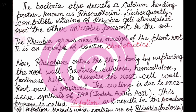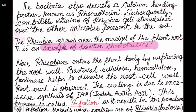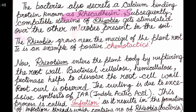When the bacteria grow and reach the roots, they exhibit a strong chemotactic response. The bacteria produce a calcium-binding protein called Rekadesin. After that, Rhizobium enters the plant body by rupturing the root cell wall. The bacteria and hemicellulose enzymes help dissolve the root cell wall, allowing the bacteria to penetrate.